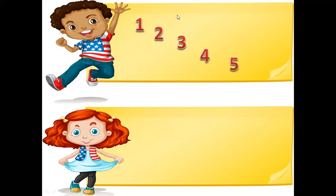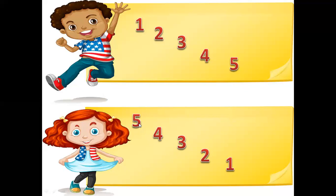Now if we want to write backward counting, how will you write it? Five, four, three, two, one. This series shows the backward counting. Look here: four is one less than five; three is one less than four; two is one less than three; and one — this is the number one.